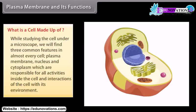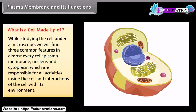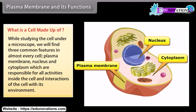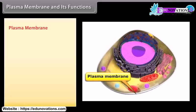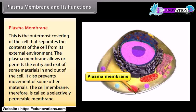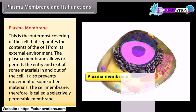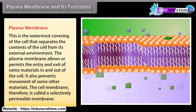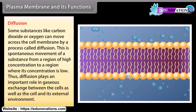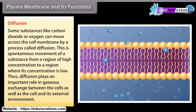What is a cell made up of? While studying the cell under a microscope, we find three common features in almost every cell: plasma membrane, nucleus, and cytoplasm, which are responsible for all activities inside the cell and interactions with its environment. The plasma membrane is the outermost covering of the cell that separates its contents from the external environment. It allows or permits the entry or exit of some materials, while preventing others — so it is called a selectively permeable membrane. Substances like carbon dioxide or oxygen can move across the cell membrane by a process called diffusion.